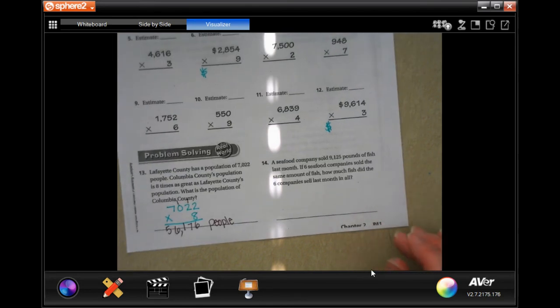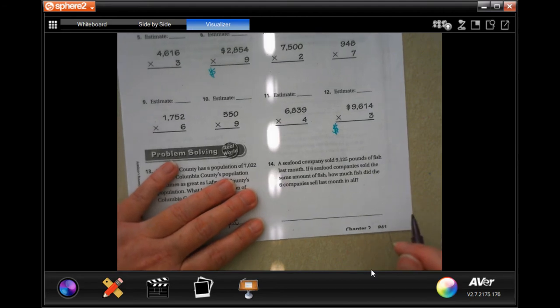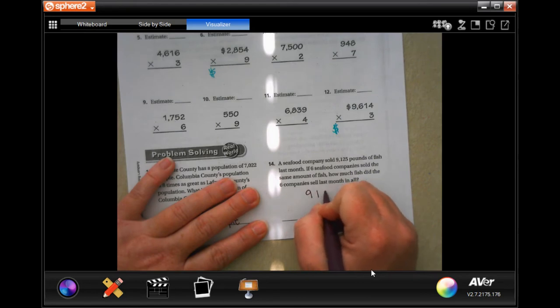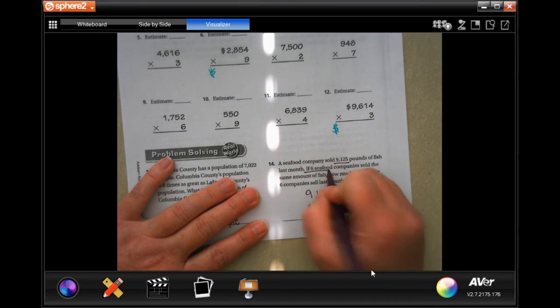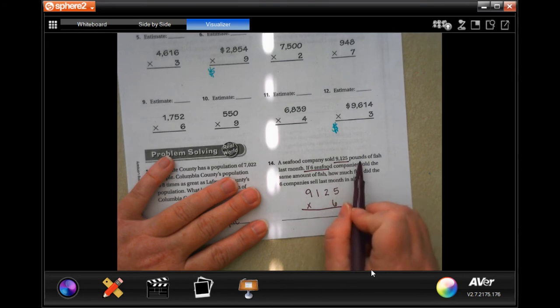A seafood company sold 9,125 pounds of fish last month. If 6 seafood companies sold the same amount of fish, how much fish did the 6 companies sell? So we have 9,125, and we're multiplying that by 6. Whatever it is, it's going to be in pounds. How much fish? Well, they're talking about it being weighed in pounds.